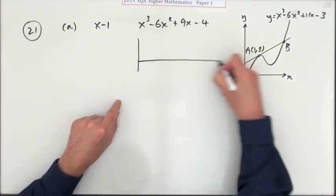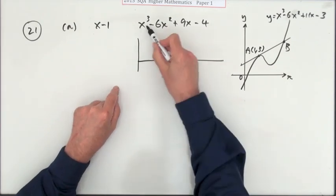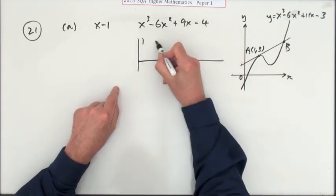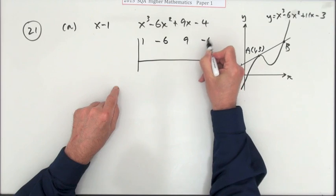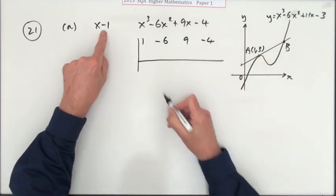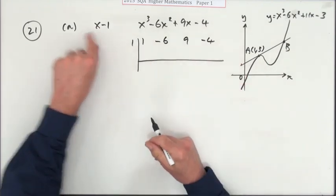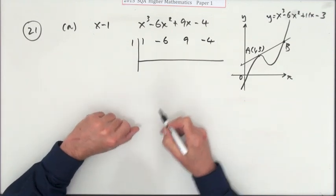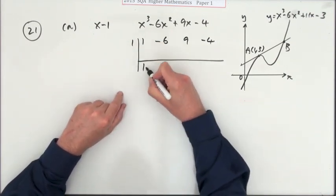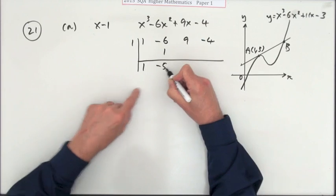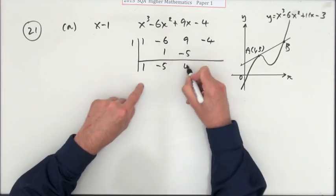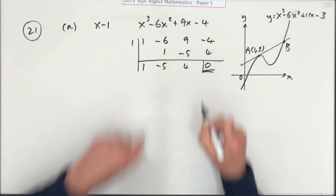So putting down your synthetic division table, all the terms are there: 1, -6, 9, -4. And if that's a factor, you'll be putting 1 through it. That could have been a root, so add it down, multiply it up, add it down, multiply it up, add it down, multiply it up, add it down.